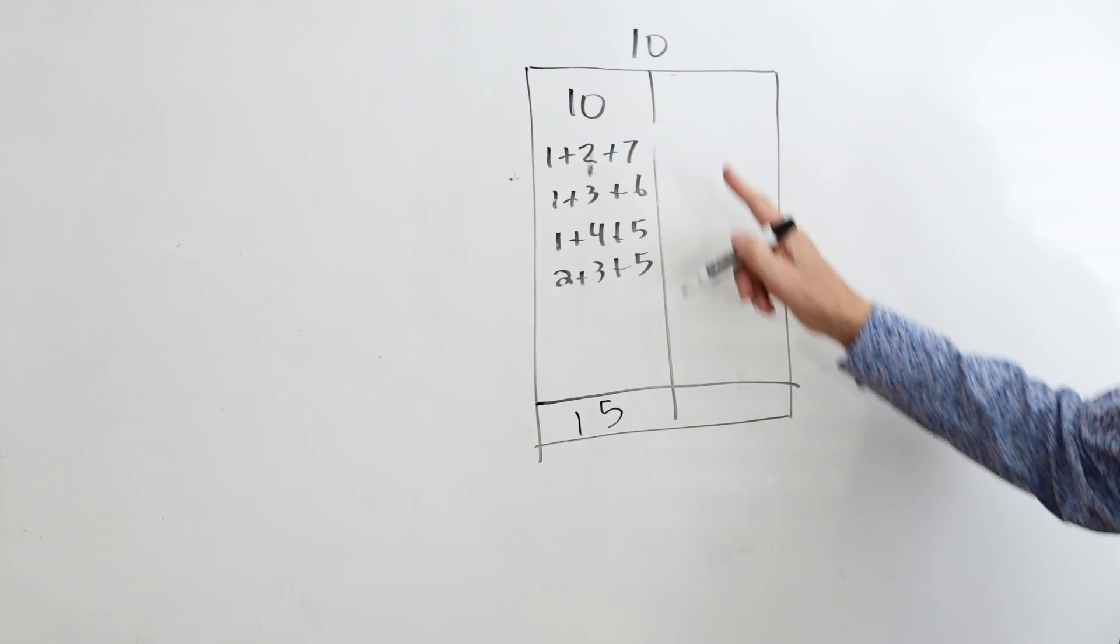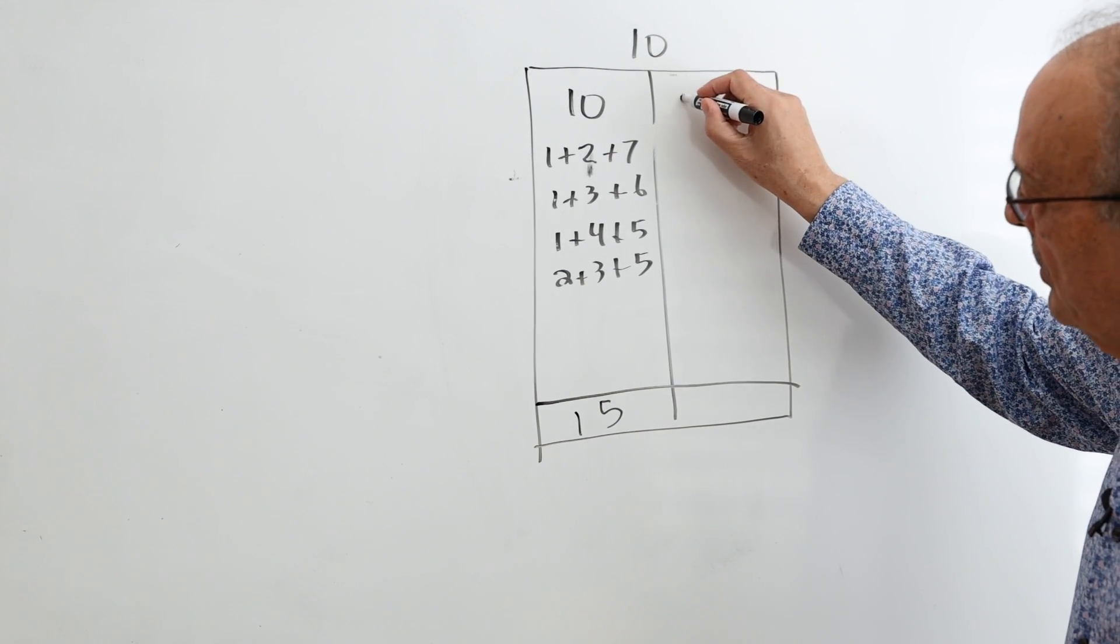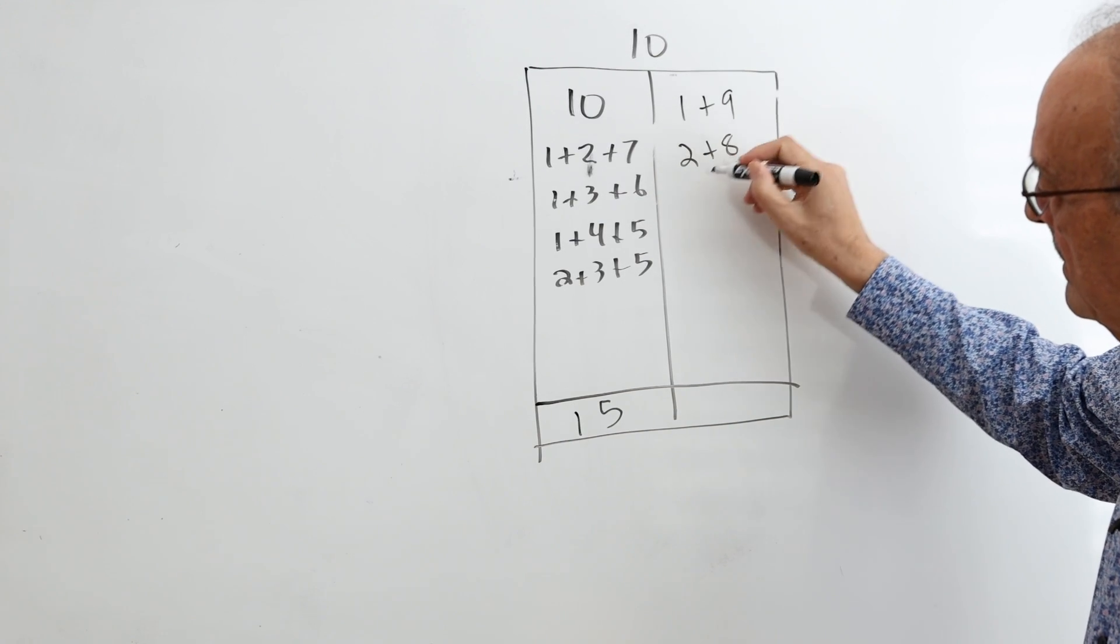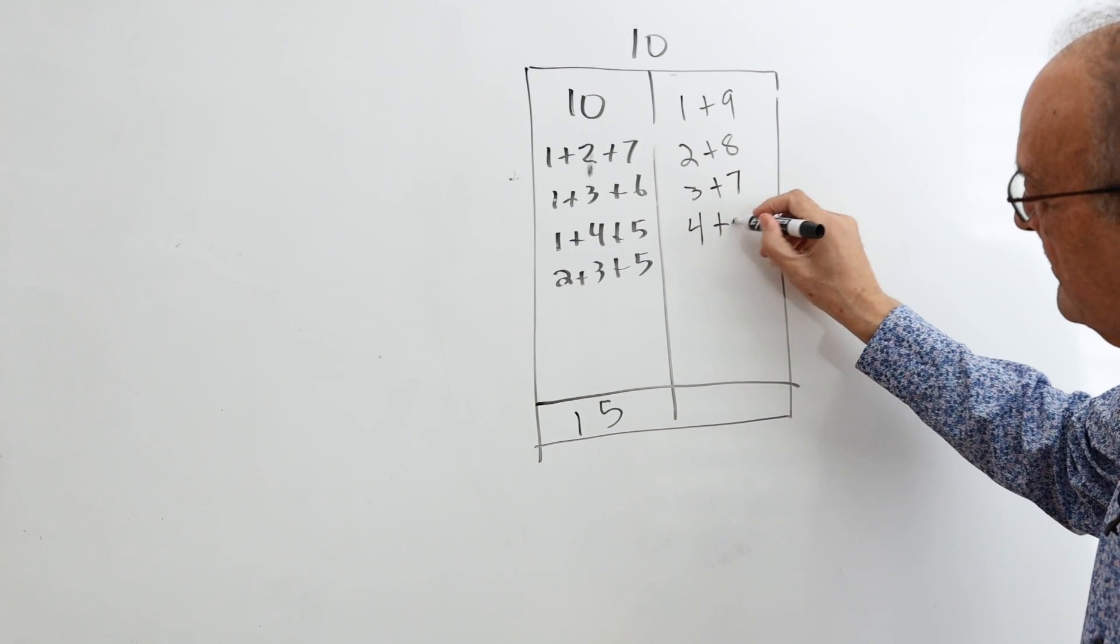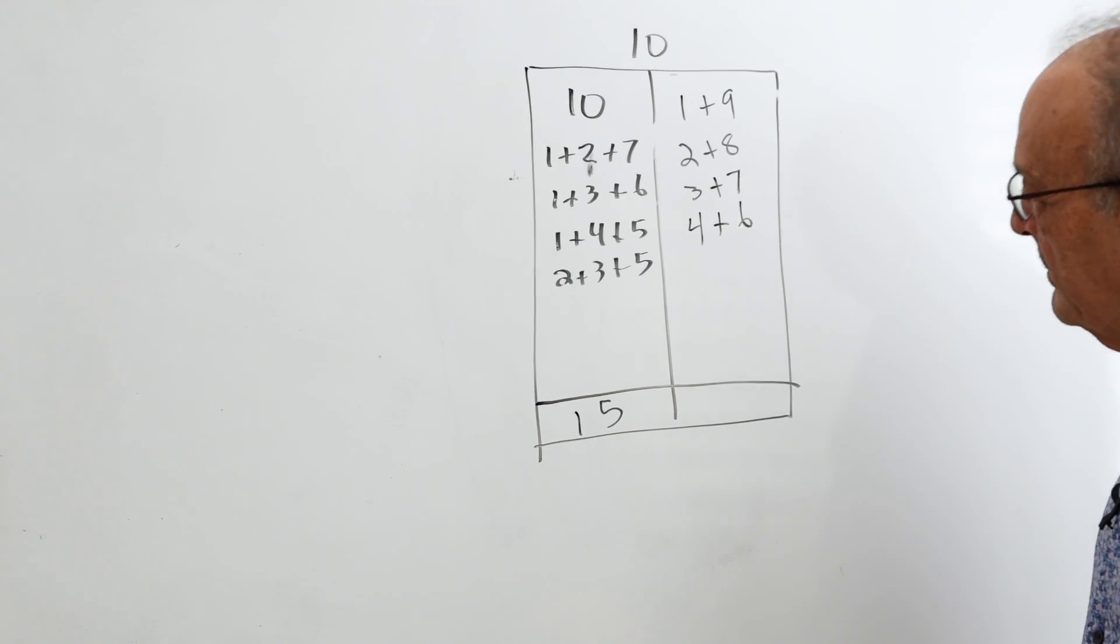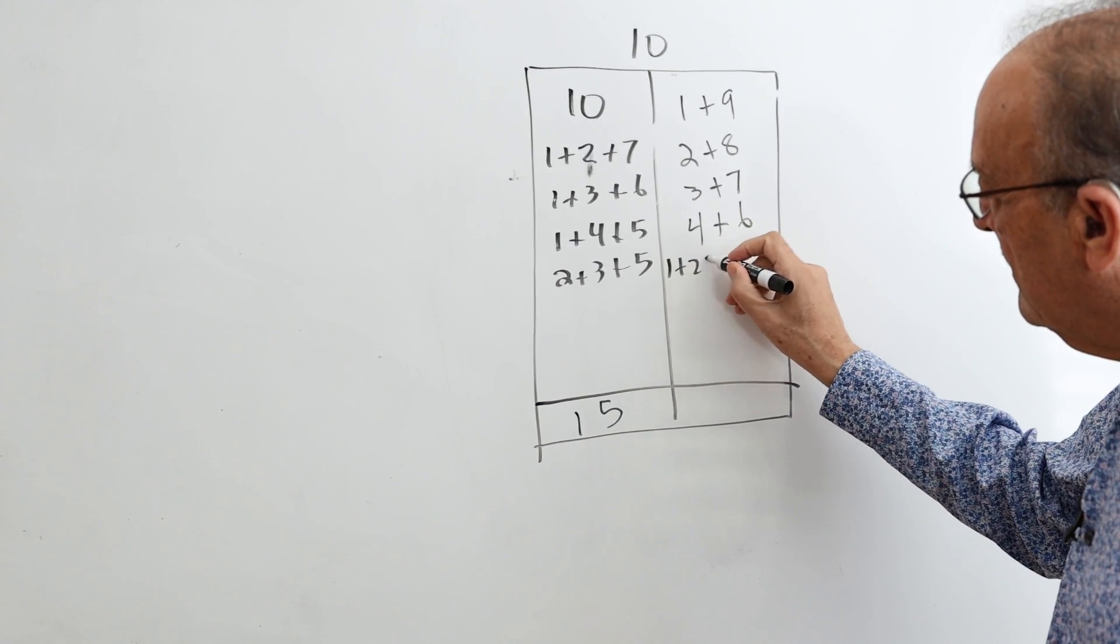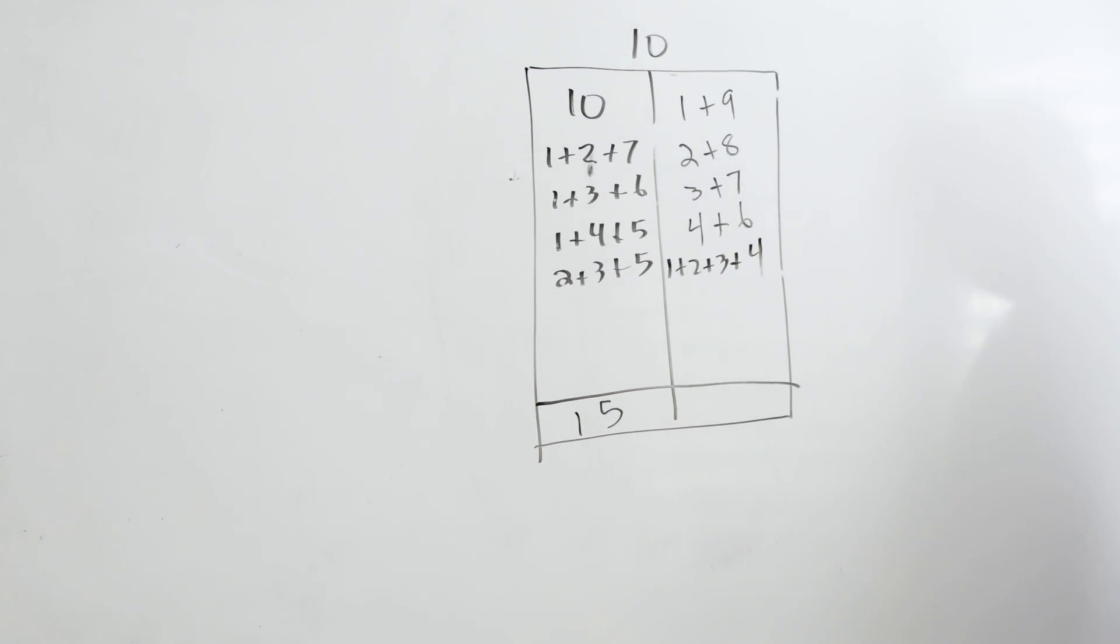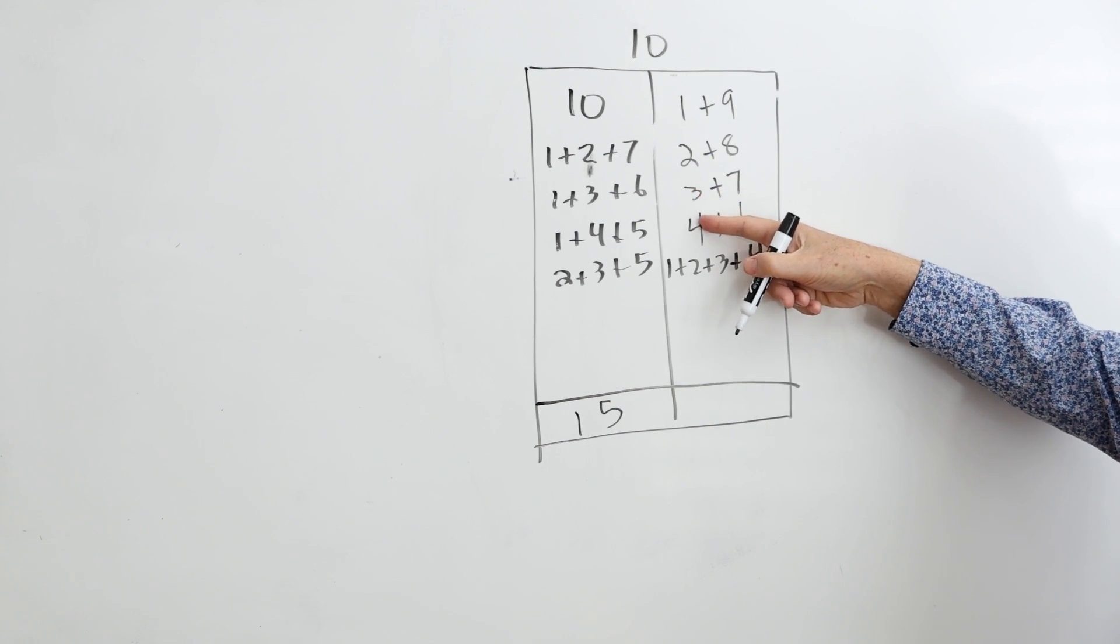And here I'll be making 10 with an even number of summons. So I can have 1 and 9, 2 and 8, 3 and 7, 4 and 6, or I can go 1 plus 2 plus 3 plus 4. So if I add the first numbers, I get 1 plus 2 is 3, 6, 10, 11.